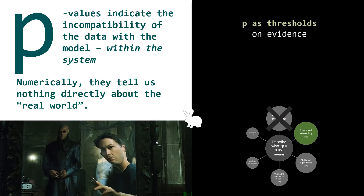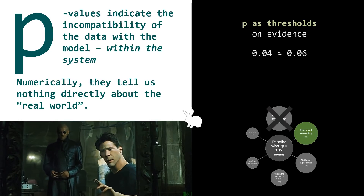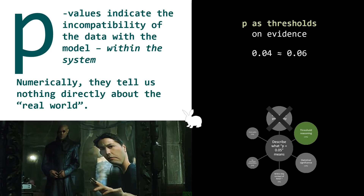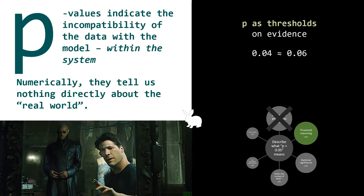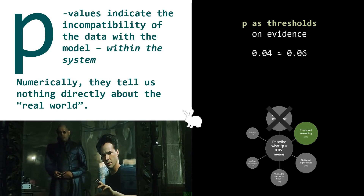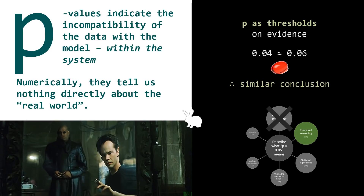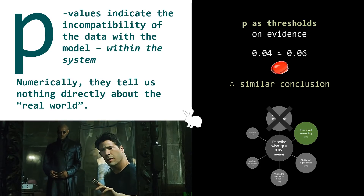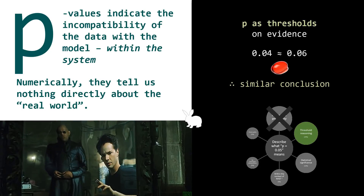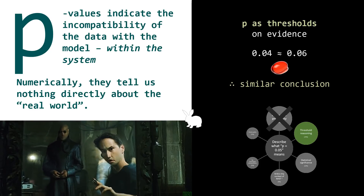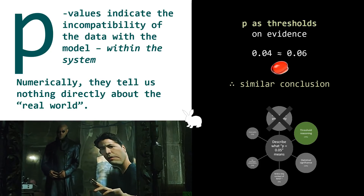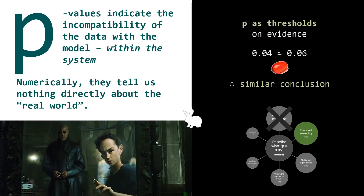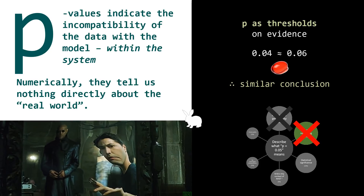What's wrong with P as thresholds? Consider p-values of 0.04 and 0.06. If threshold reasoning is used, we end up with dichotomous interpretations of the data. However, 0.04 is numerically very similar to 0.06 — they indicate approximately the same amount of incompatibility, and we should be making approximately the same conclusion. We should interpret p-values flexibly and within the context of the experiment and the plausibility of the hypothesis. Statements such as 'approaching statistical significance' or 'trends towards statistical significance' should be abandoned, as they are at best meaningless and most likely mislead.